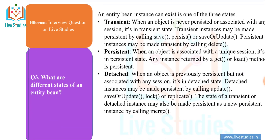Another question: what are the different states of an entity bean? An entity bean instance can exist in one of three states — transient, persistent, and detached. Transient: when an object is never persisted or associated with any session, it is in a transient state. A transient instance may be made persistent by calling the save() or saveOrUpdate() method. A persistent instance may be made transient by calling the delete() method.